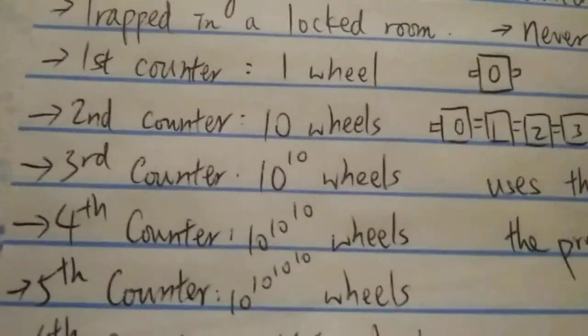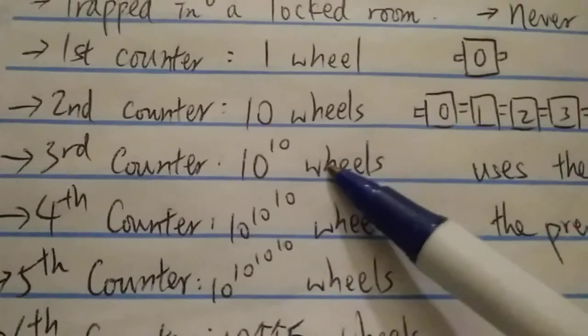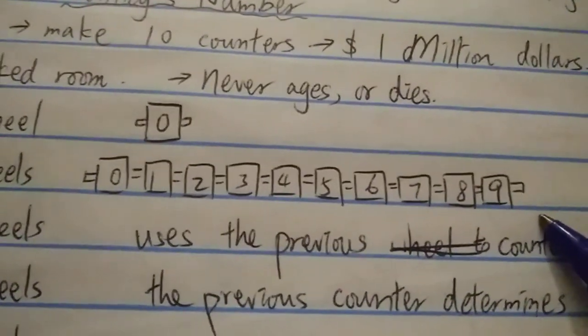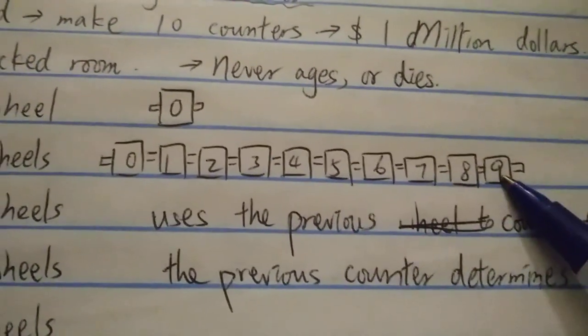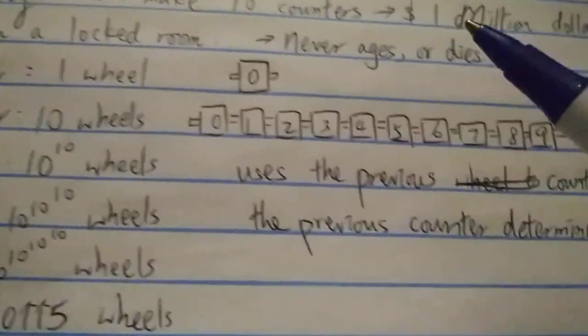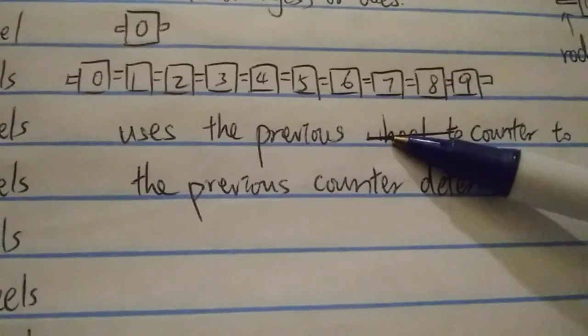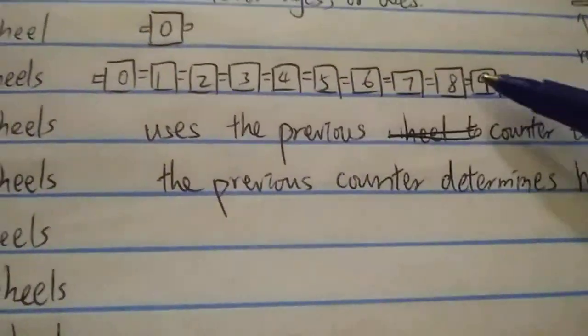As soon as he starts the third counter, he immediately regrets it. The next one is 10^10 wheels - I believe ten billion wheels, because the previous counter determines how many wheels in the next one. The second counter has ten digits, so you start with all wheels at zero. Once you build the first wheel it turns to one, then two, three, four, five. This is how you count the number of wheels on the next counter. Therefore the next one has ten billion wheels.